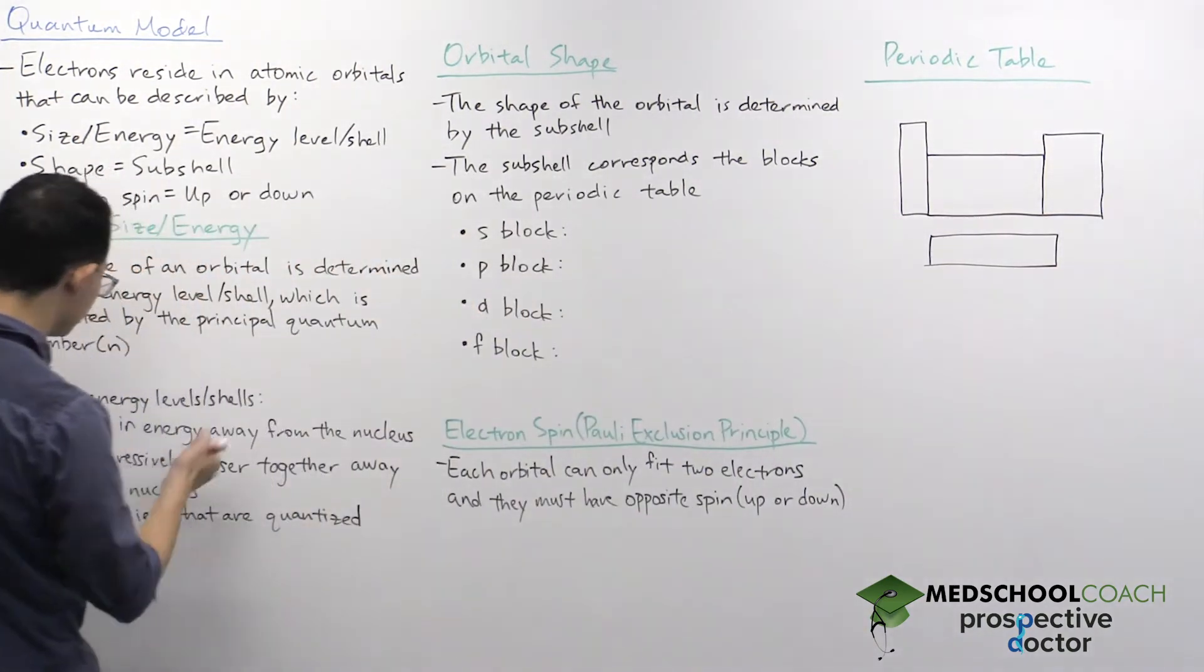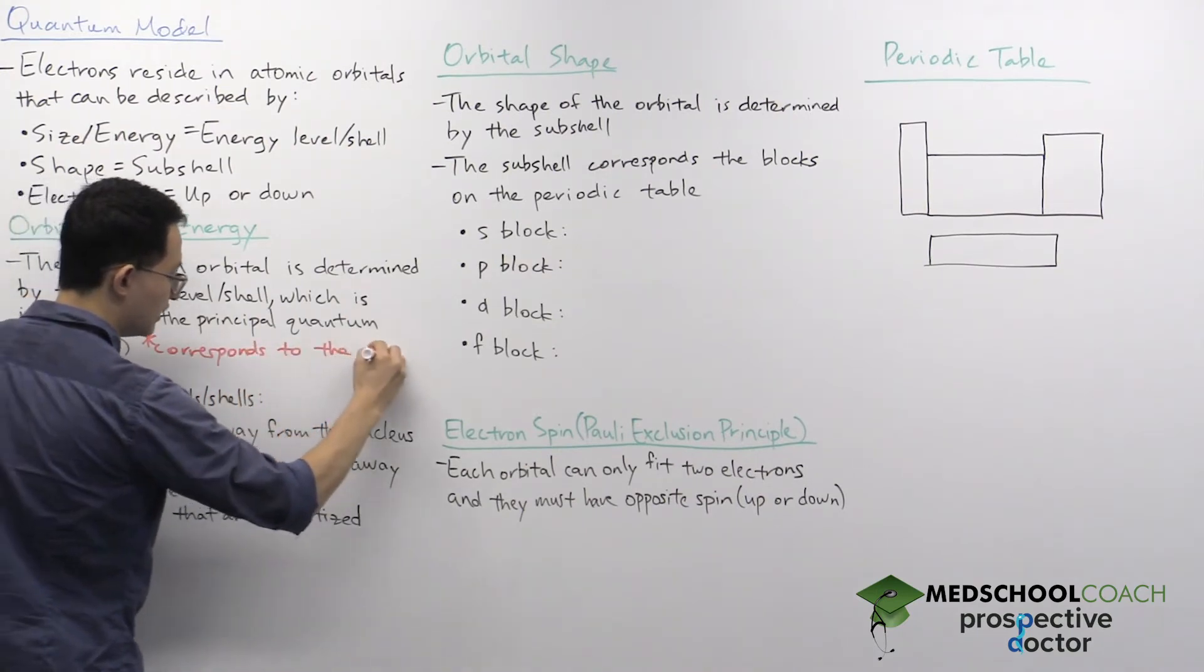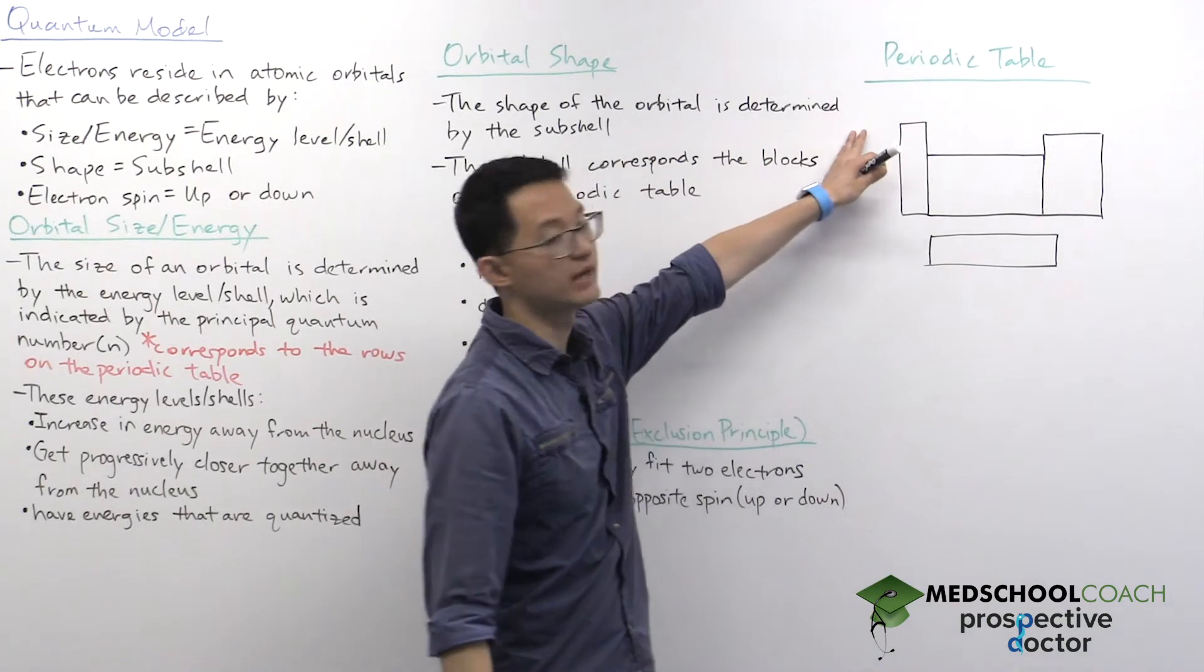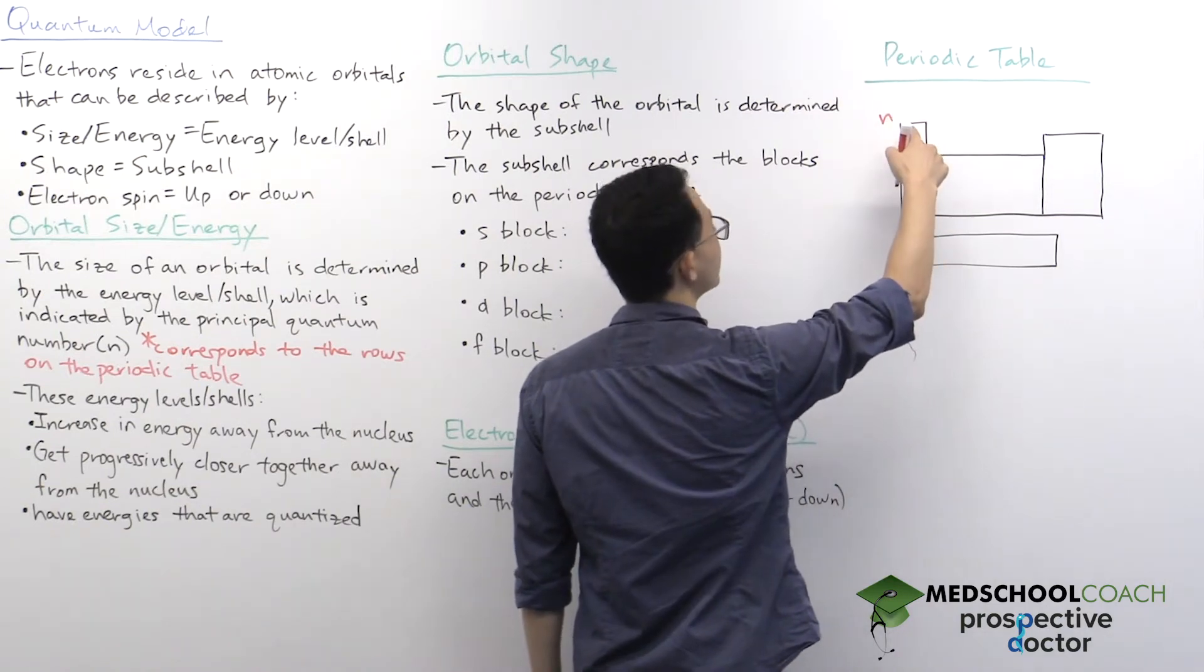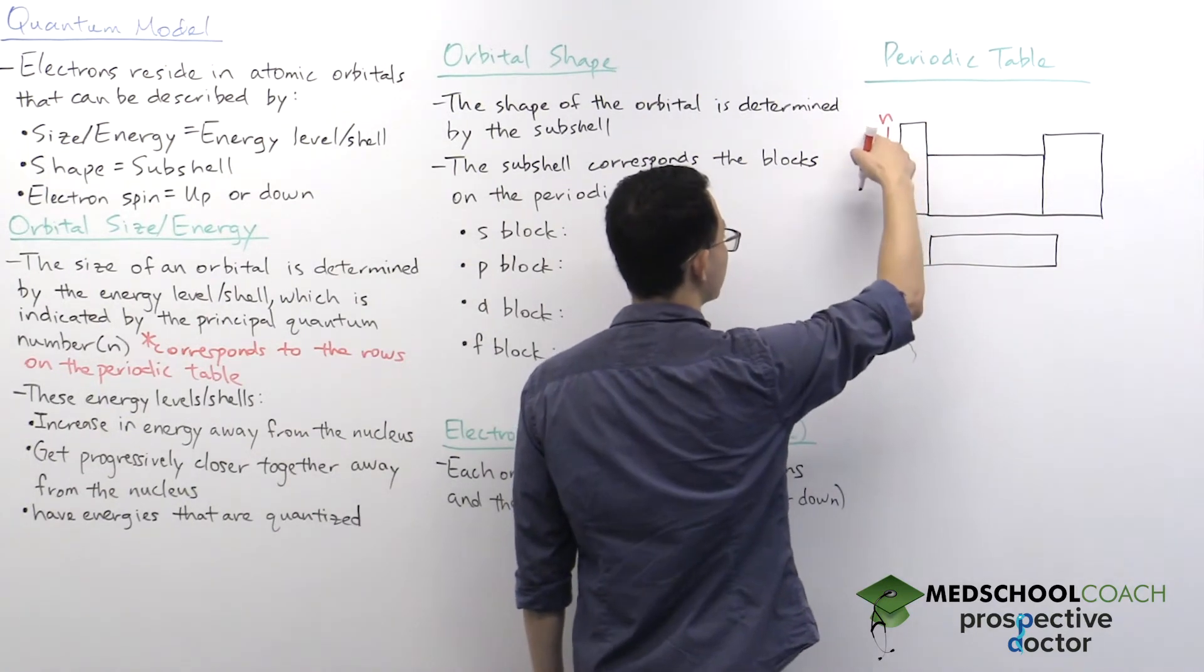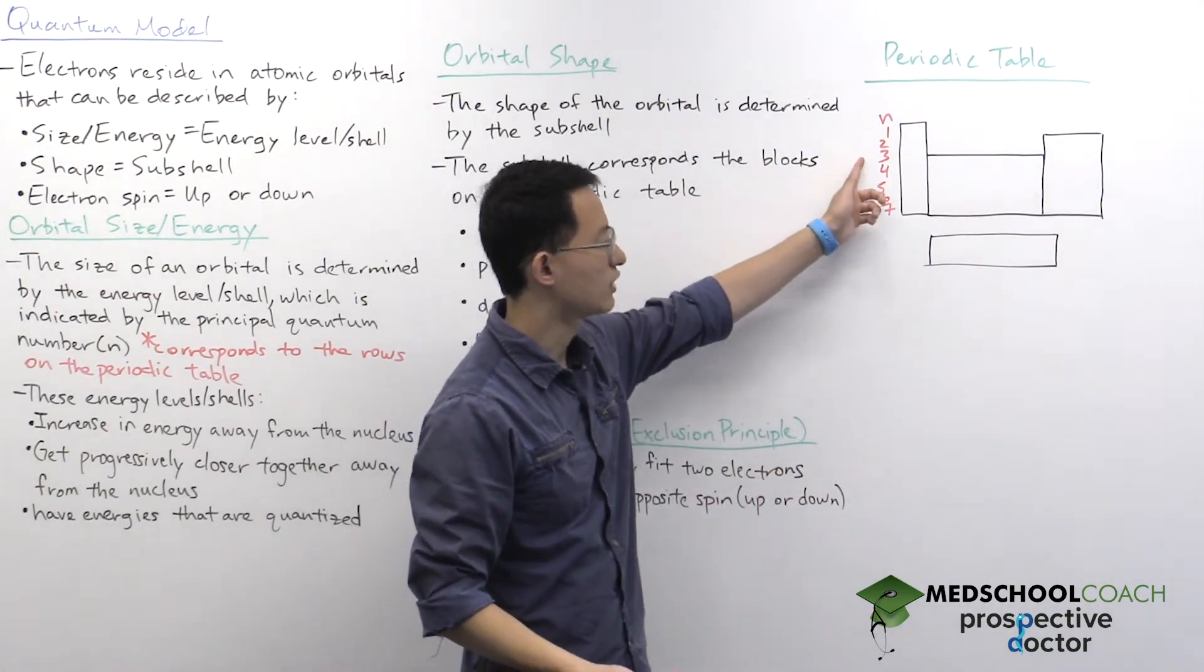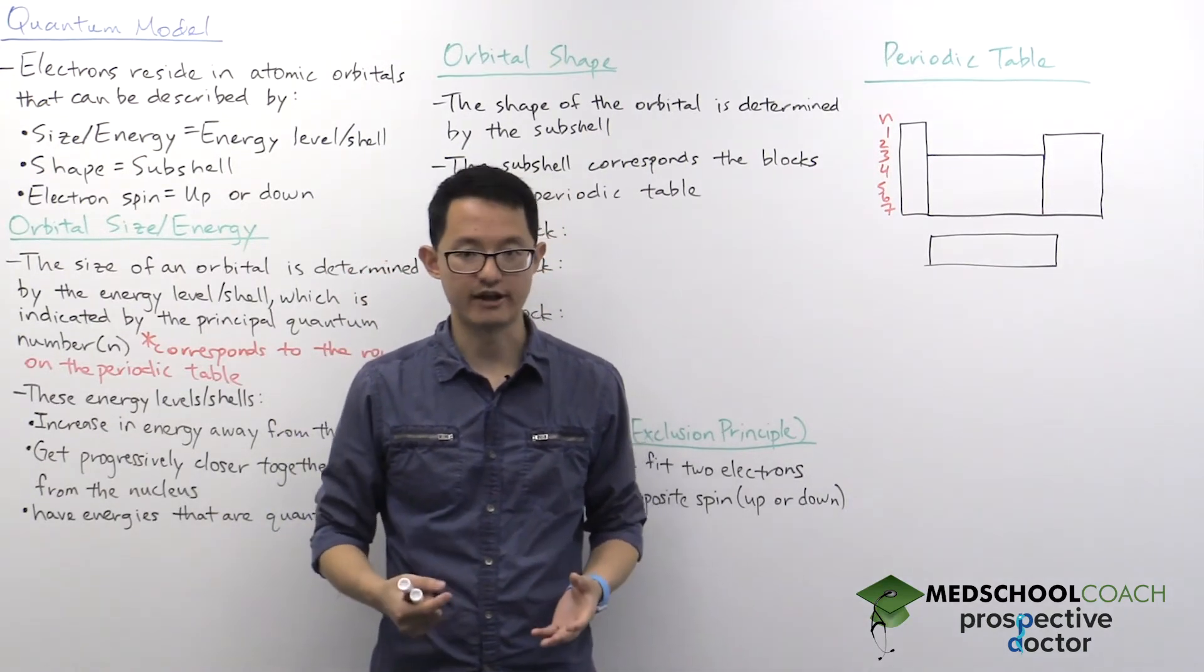As it turns out, the principal quantum number n corresponds to the rows on the periodic table. If we look at this periodic table, if you're in the first row, that means you have electrons in the first shell, the n equals 1 shell. If you go to the other rows, then you've got the first shell, the second shell, third shell, all the way to the seventh shell. So if you have an atom in the third row of the periodic table, the atom has electrons in the first shell, the second shell, and the third shell.